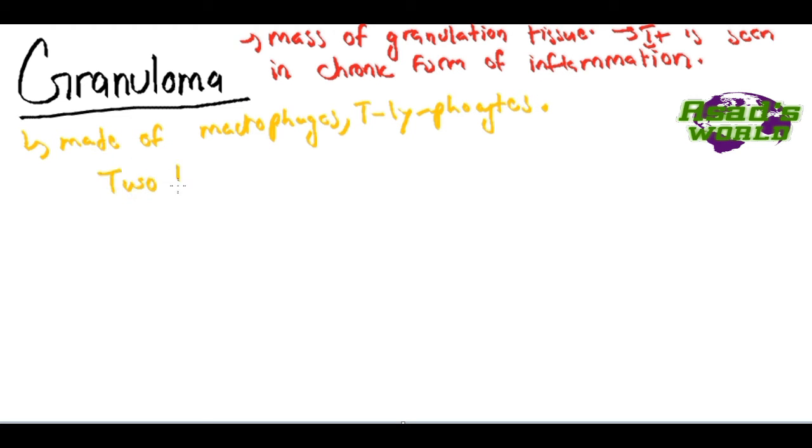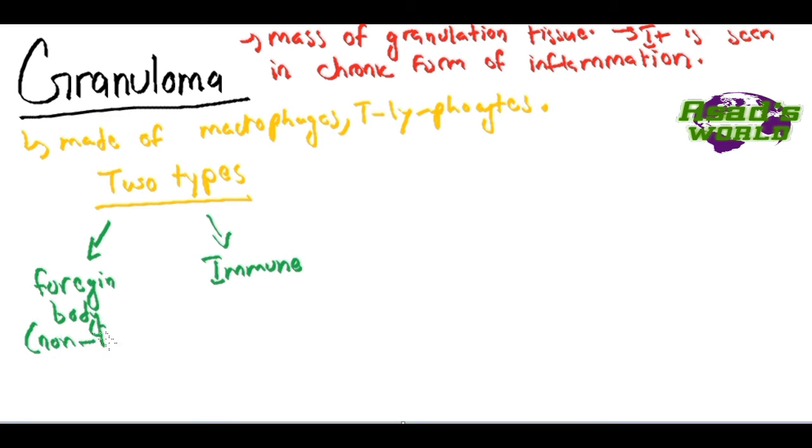Granuloma is of two types. The first type is foreign body, which is non-immune form, and immune type. In foreign body there is no immune response, and it is caused by things like talc and sutures. Immune type is caused by microbes and self antigen.